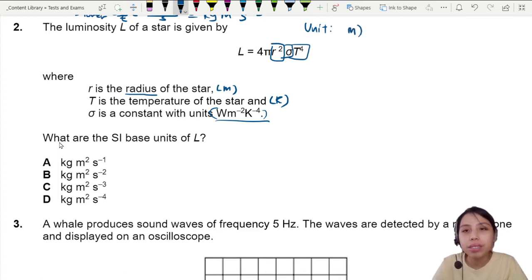Radius is in meters squared. Sigma is watts per meter squared kelvin to the negative 4, and temperature is kelvin to the power of 4.